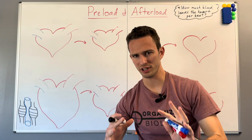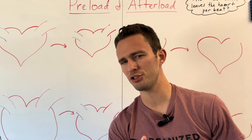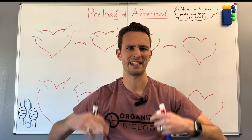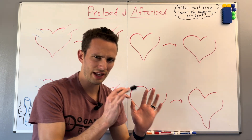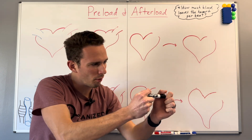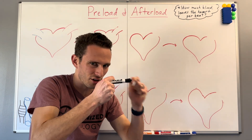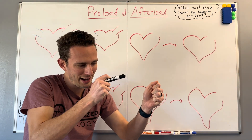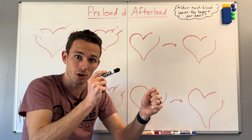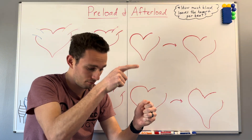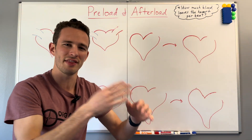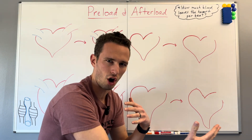Let's start with preload. Imagine yourself using a bow and arrow like Katniss Everdeen in the Hunger Games. Imagine that you pull the bow and arrow back ever so slightly, just about to here. So here's your arrow, you're pulling it back, and if you let go, that arrow will likely just go boop — straight down. It doesn't push that arrow very hard.